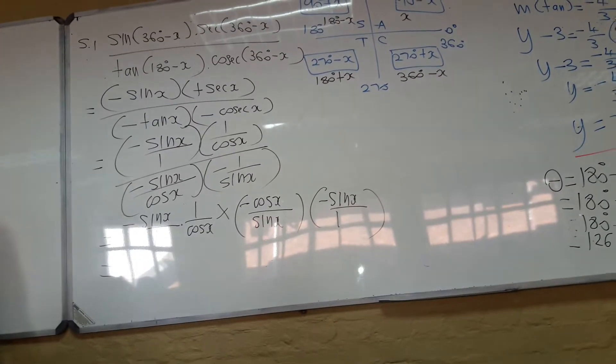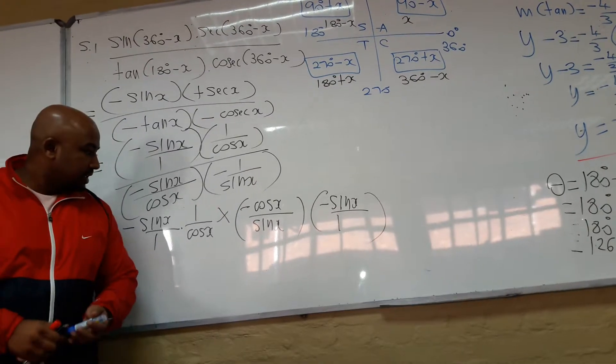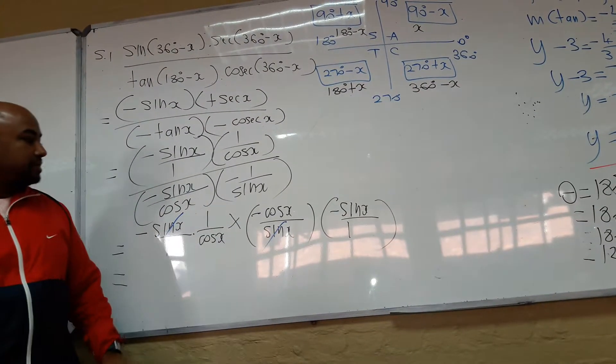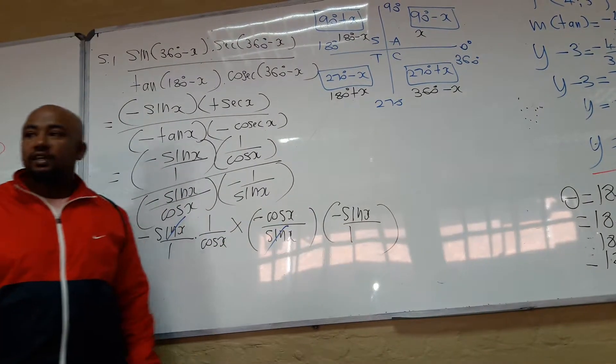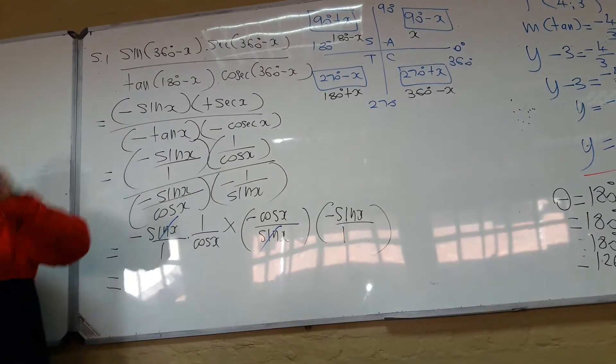Now it's all multiplication. So let's start cancelling. What can I cancel here? Sine and sine. Sine on the top, sine in the bottom. Or this sine with that sine. You need a pair. Okay, there must be two. One on the top, one in the bottom.